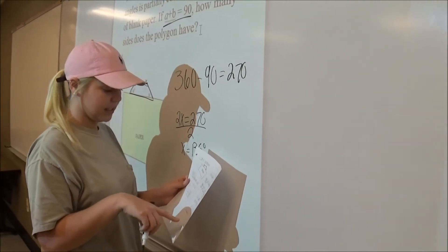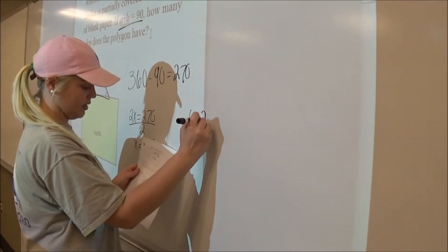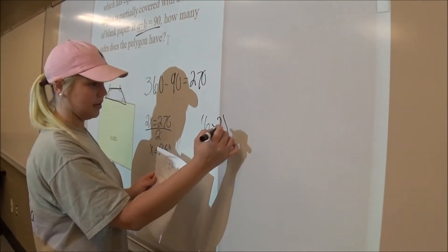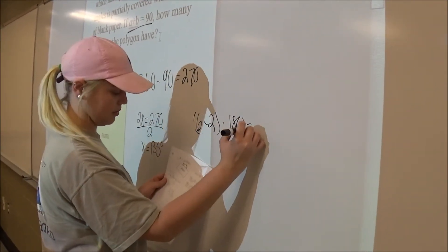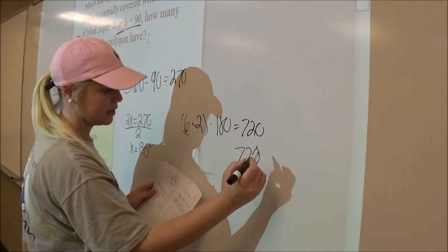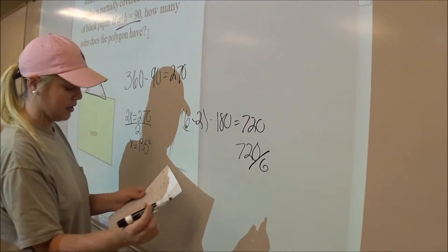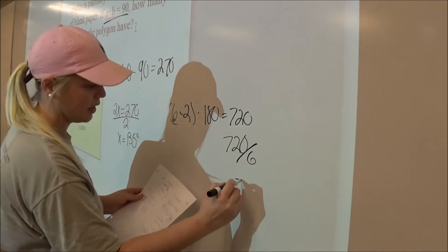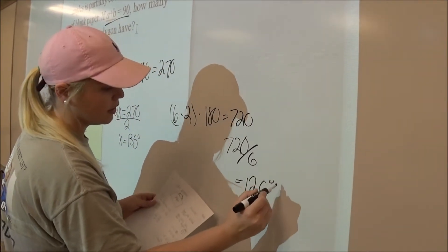I tried 6 minus 2 times 180 equals 720. And then I divided 720 by 6 to see what each angle was, and that gave me 120. So I know that wasn't it.